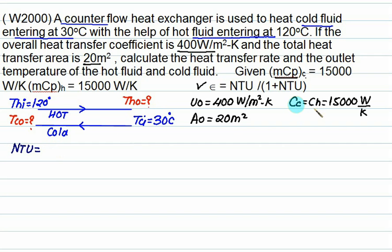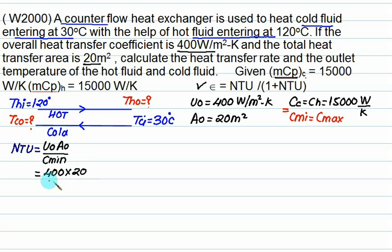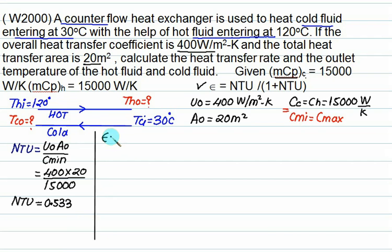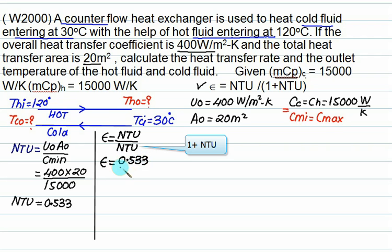Since Ch equals Cc, Cmin equals Cmax and CR equals 1. NTU equals U0 times A divided by Cmin equals 400 times 20 divided by 15000, which gives NTU equals 0.533. Since CR equals 1 for counter flow, effectiveness is given by NTU divided by (1 plus NTU), which equals 0.533 divided by (1 plus 0.533), giving effectiveness equals 0.347.